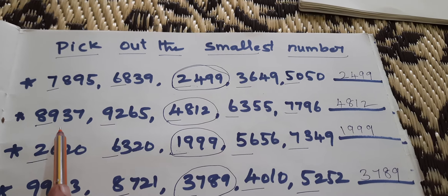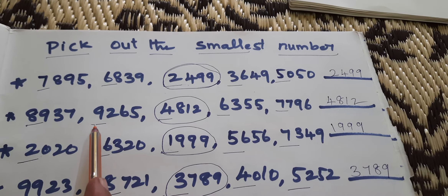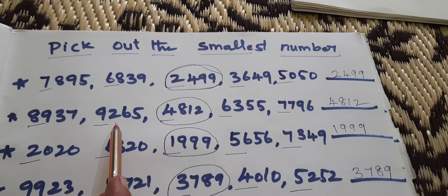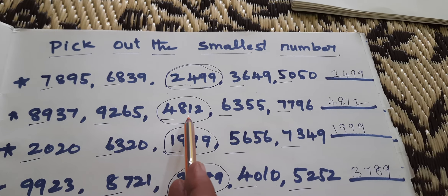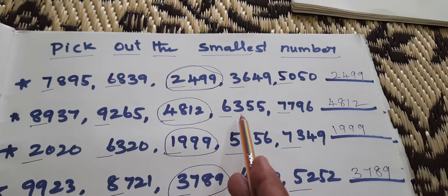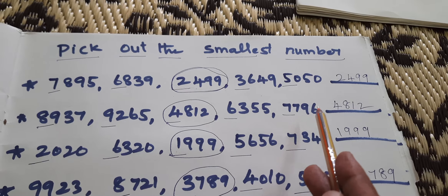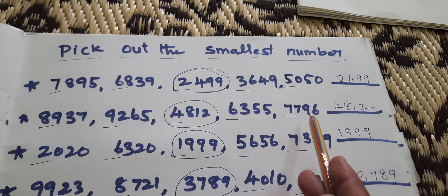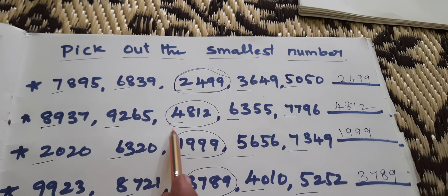Then, the next set: 8937, 9265, 4812, 6355, 7796. Which one is the smallest number? 4812 is the smallest number.